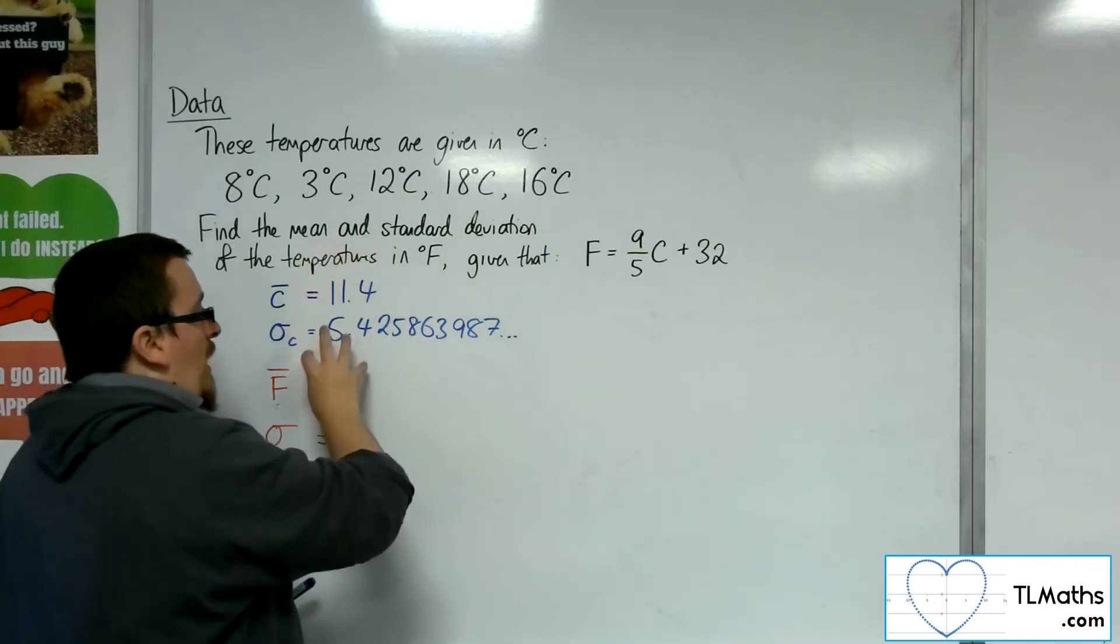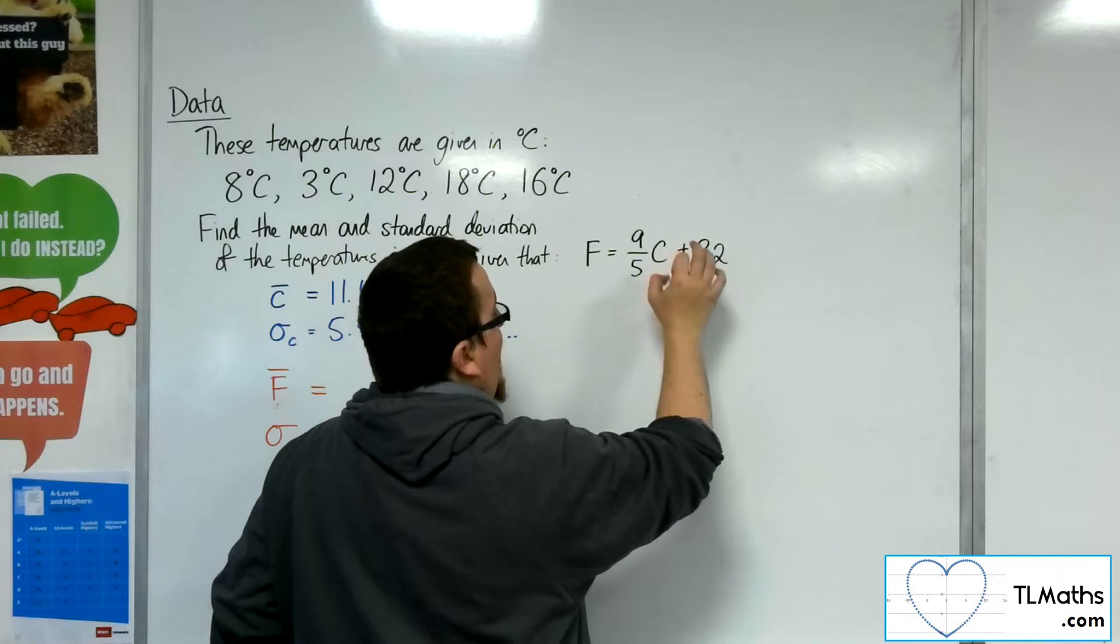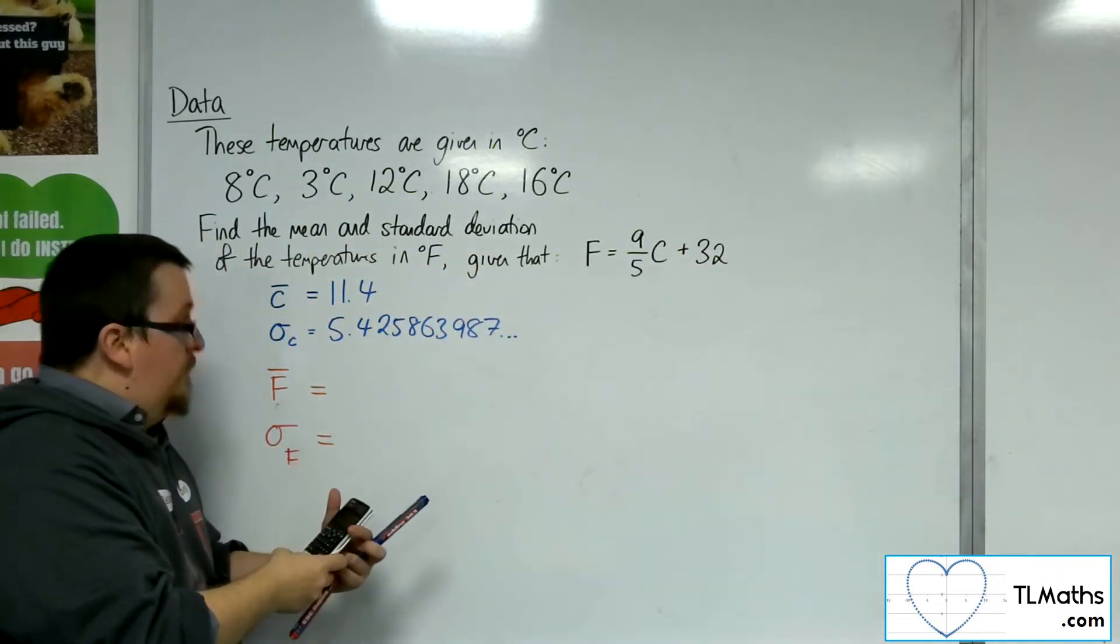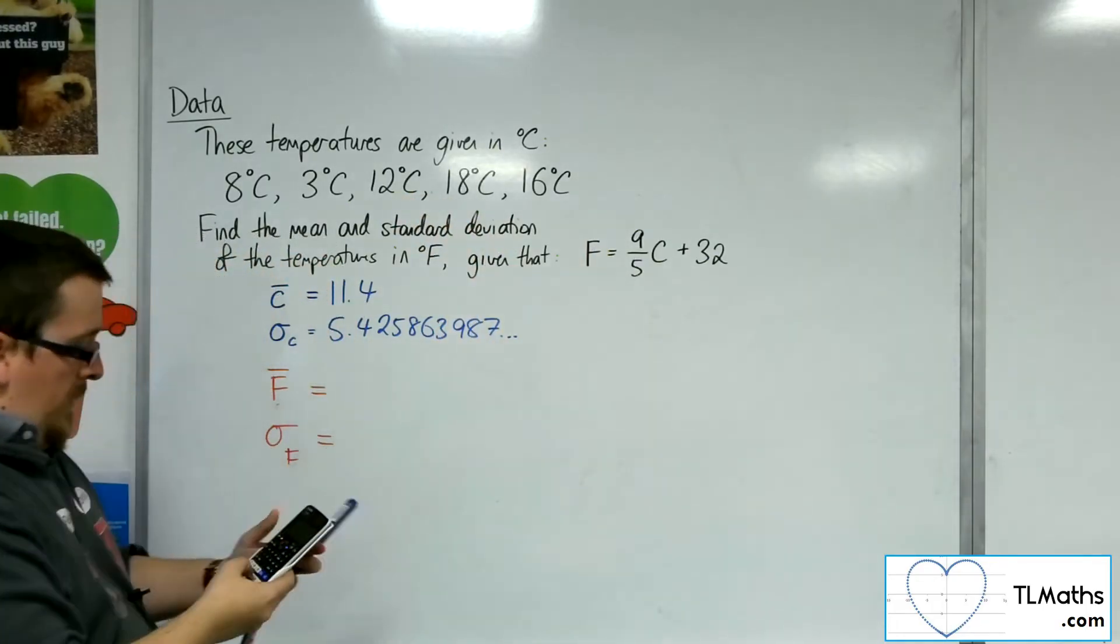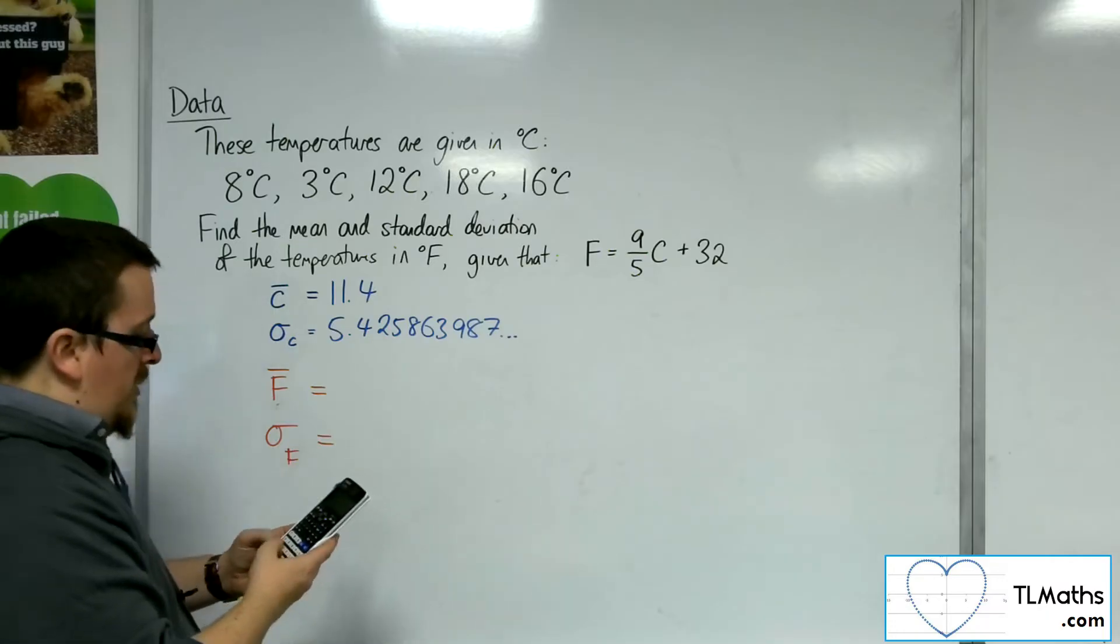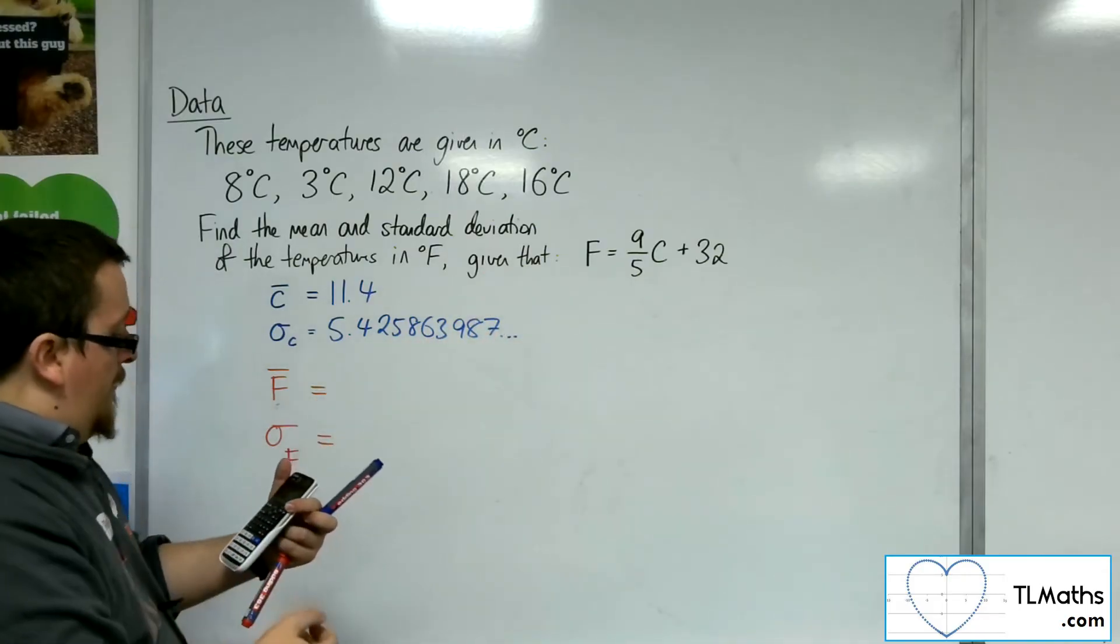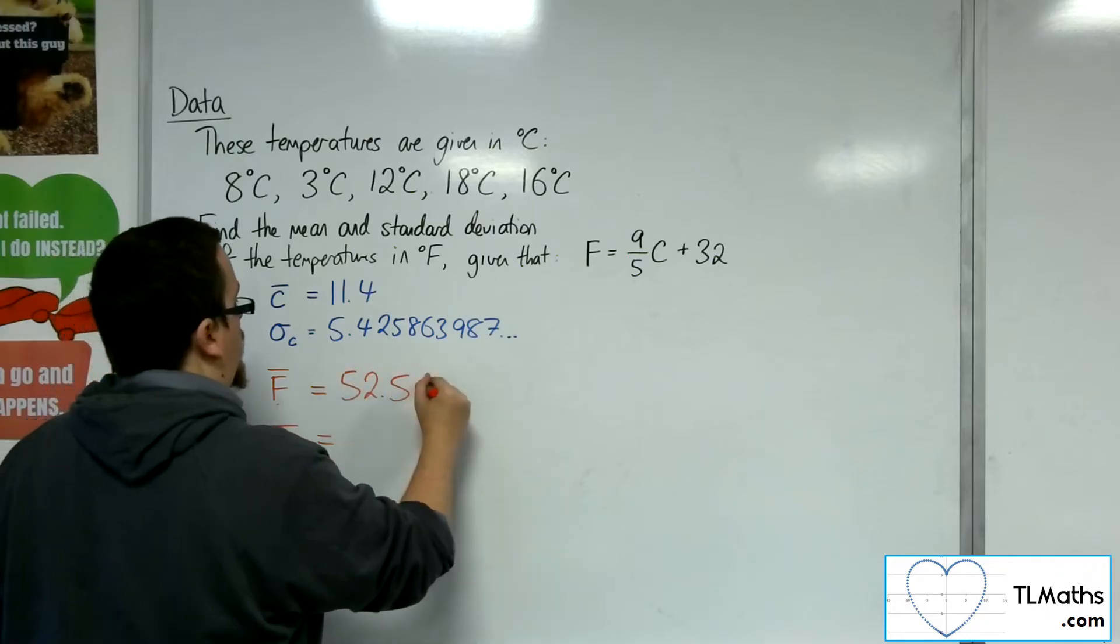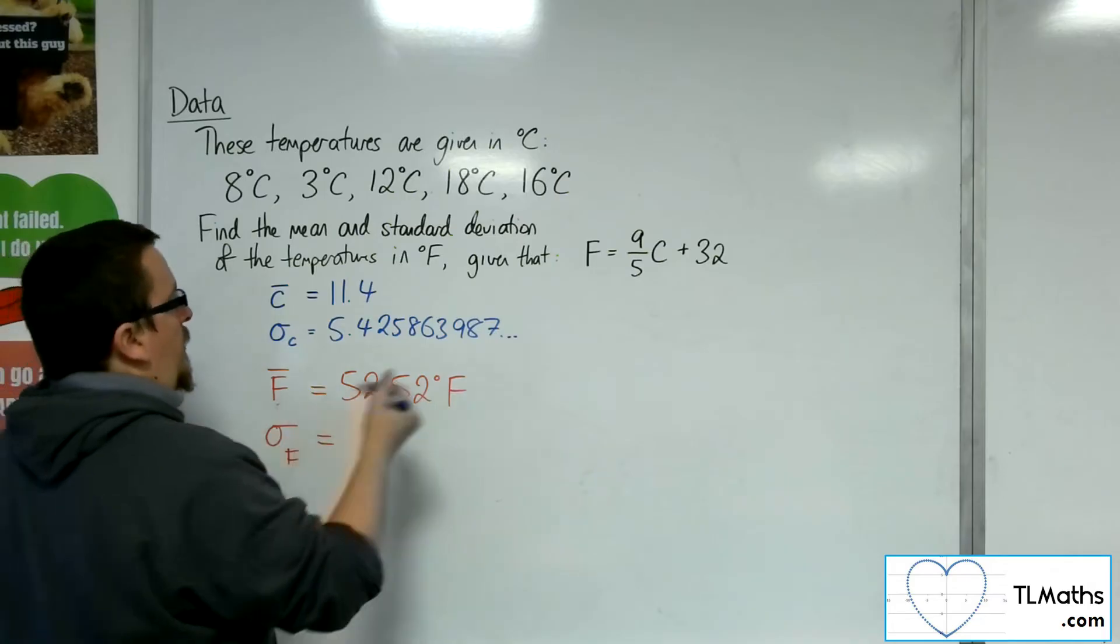when you are linear coding, the mean gets affected by both the multiplication and by the addition. So what we need to do is do 9/5 of 11.4 plus 32. So 9/5 times 11.4 plus 32. So you just substitute it into that effectively. And you get 52.52. So it's 52.52 degrees Fahrenheit. That is the mean in degrees Fahrenheit.